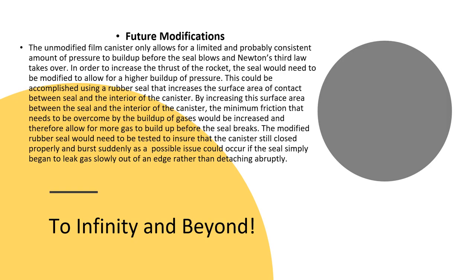For our future modifications, we realize that the film canister only allows for a limited and probably consistent amount of pressure to build up before the seal blows. In order to increase the thrust of the rocket, the seal would need to be modified to allow for a higher buildup of pressure. This could be accomplished using a rubber seal that increases the surface area of contact between seal and the interior of the canister.